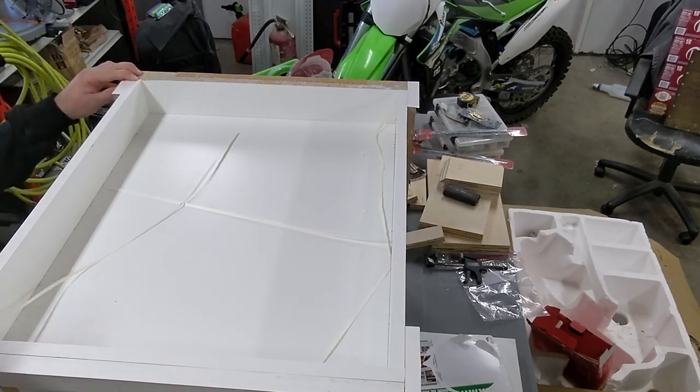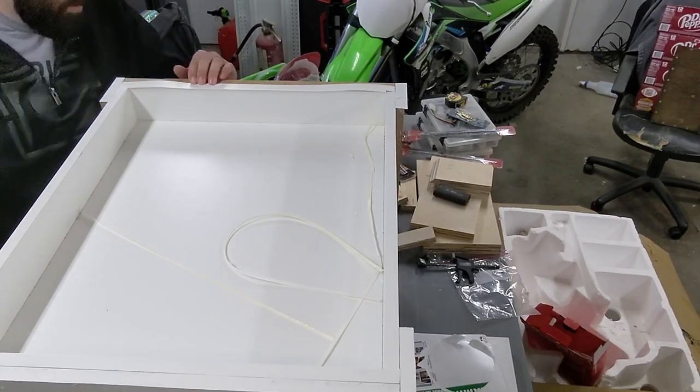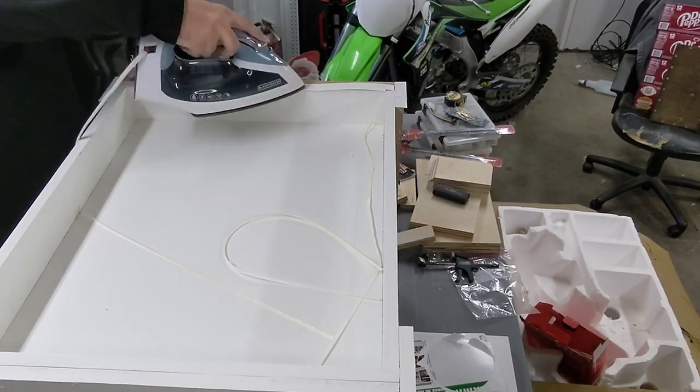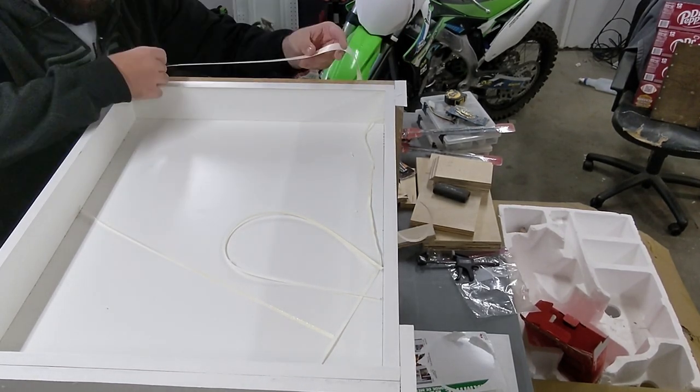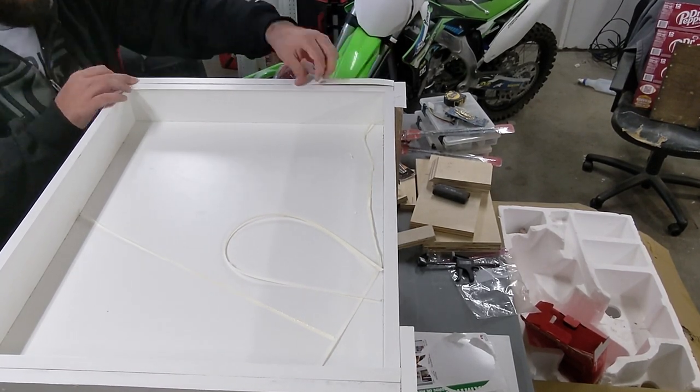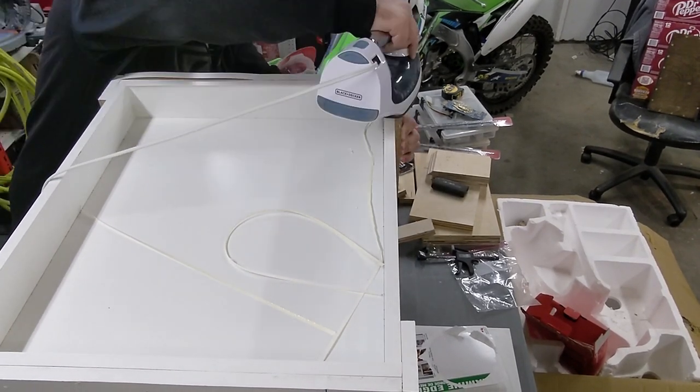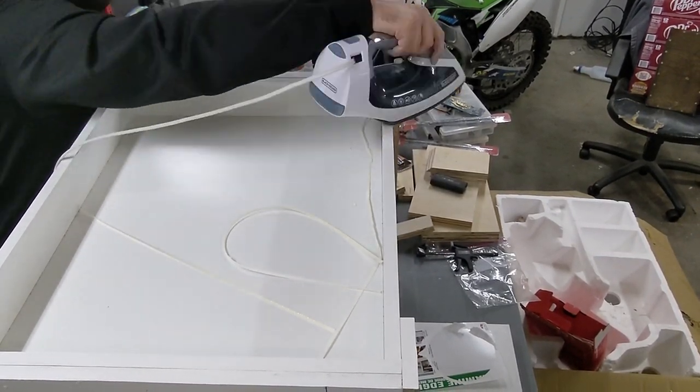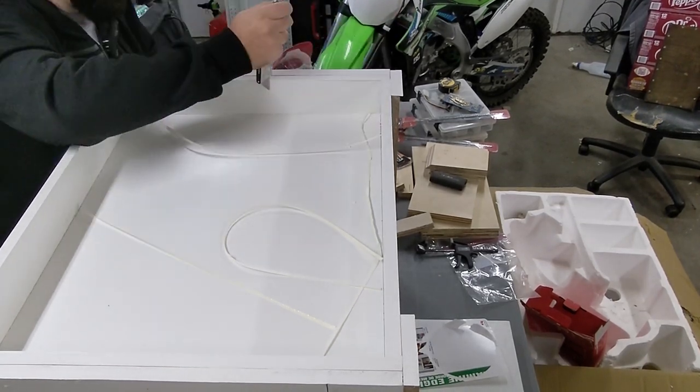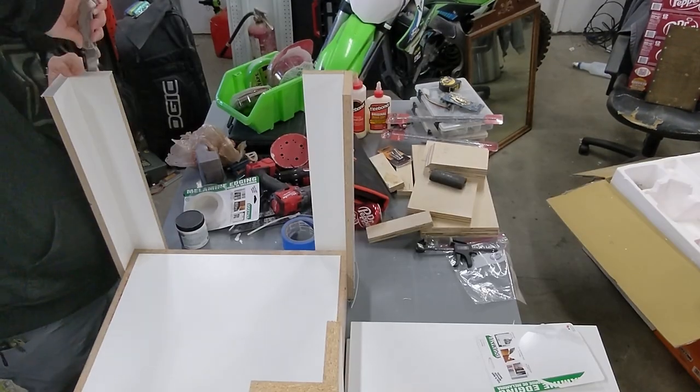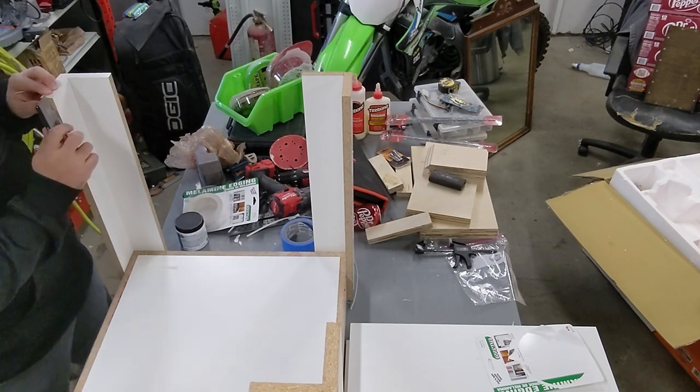I just bought the stuff at my local hardware store, but I'm sure you can get it online at Amazon or whatever. Eventually, I'll start putting links to that stuff in the description, but today is not that day. In order to cut off the excess, I just grabbed my utility knife and used the board that it was ironed onto as the guide.